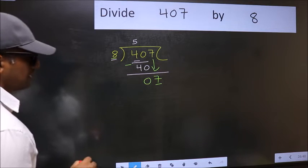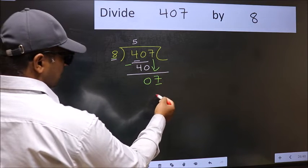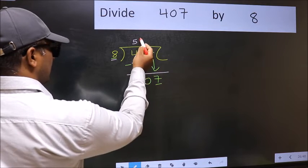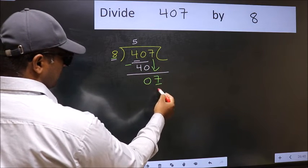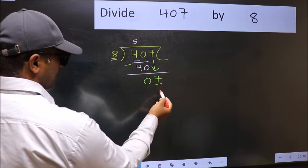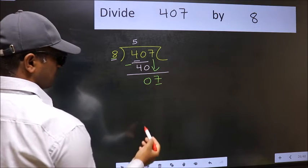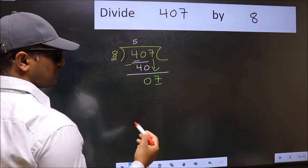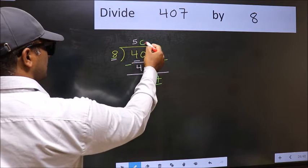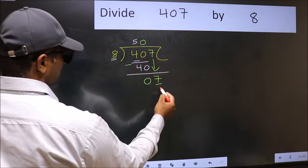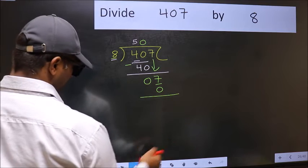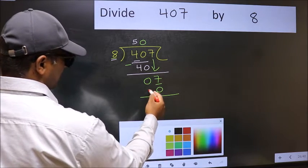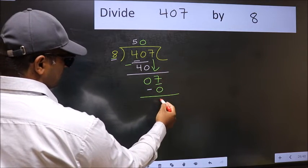what you should think of doing is which number should we take here. If I take 1, we will get 8. But 8 is larger than 7. So what we should do is we should take 0. So 8 into 0, 0. Now we should subtract. 7 minus 0, 7.